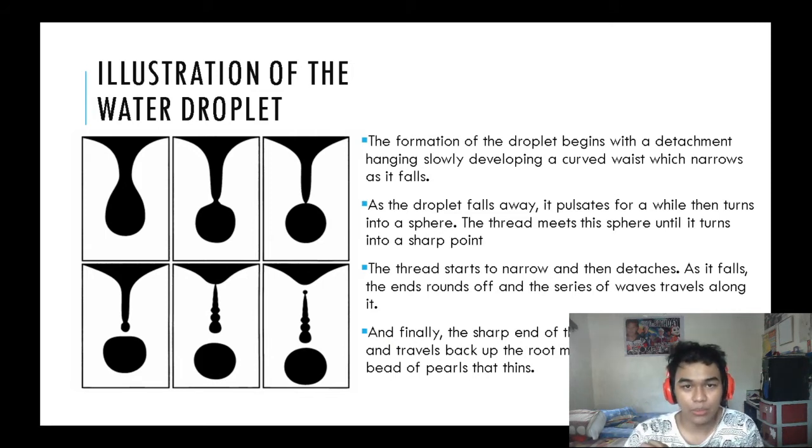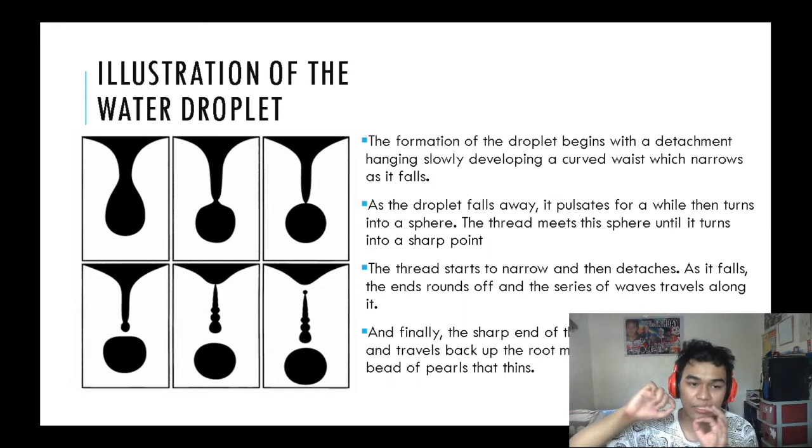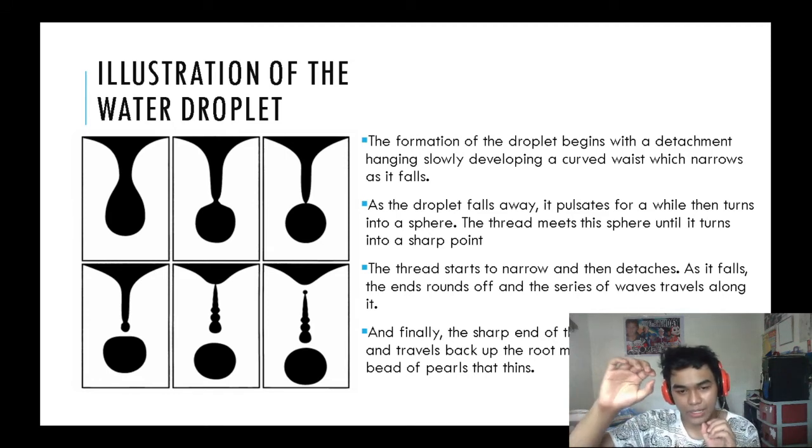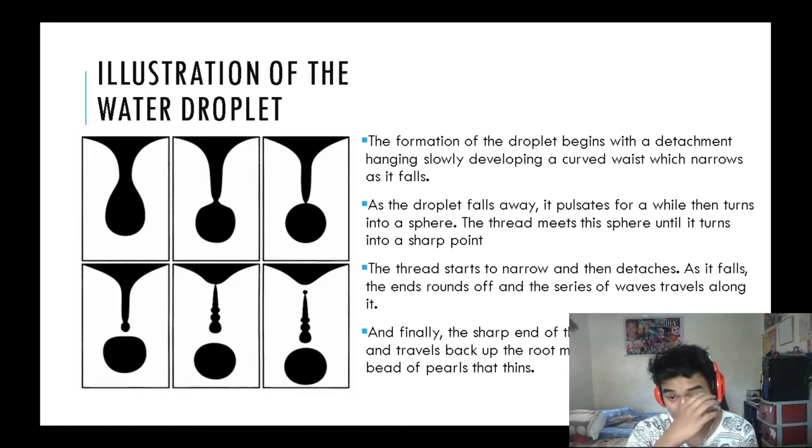What we see here is that the root of the water slowly detaches from its roots. As it falls, it turns into a teardrop shape which looks like this one, and as it falls down it turns into a sphere and that sphere falls down. What you can see from the sphere falling down and detaching from its root is that a small thread can be seen, and that thread connects through the droplet. As that goes on, it detaches and becomes like a beaded pearl type of drop.